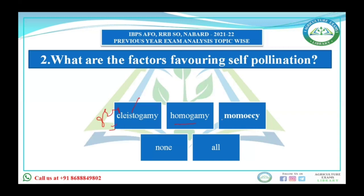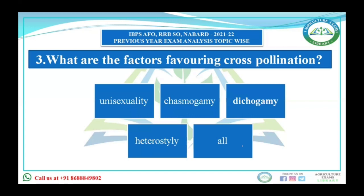The last factor is monoecy — meaning both sexes are present on the same plant. All these conditions — cleistogamy, homogamy, and monoecy — are favorable for self-pollination, so the answer will be 'all'. Now what are the factors favoring cross-pollination?